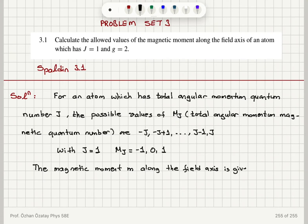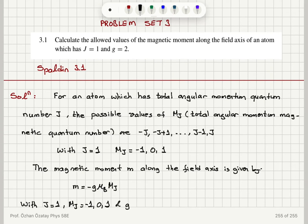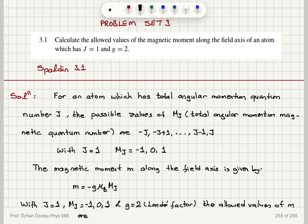The magnetic moment along the field axis is given by m equals minus g times the Bohr magneton times m sub j. With j equal to 1, m sub j can be minus 1, 0, or plus 1, and the Landé g-factor is equal to 2. Substituting these values, the allowed values are plus 2 Bohr magnetons, 0, and minus 2 Bohr magnetons.